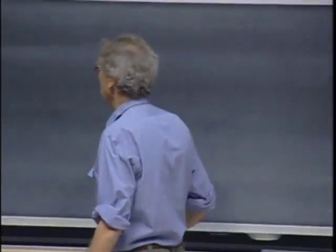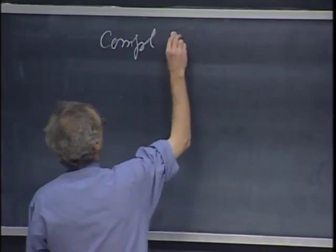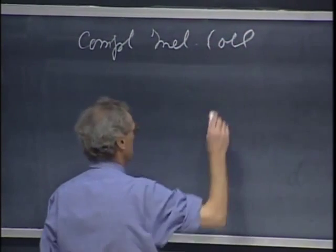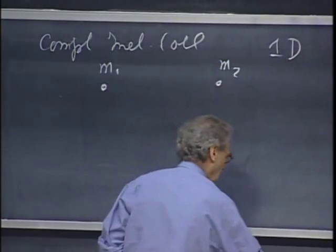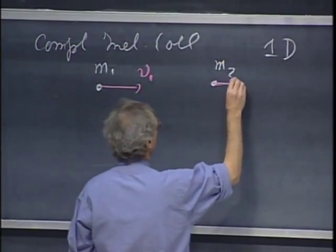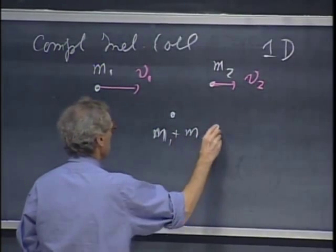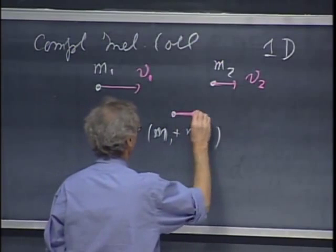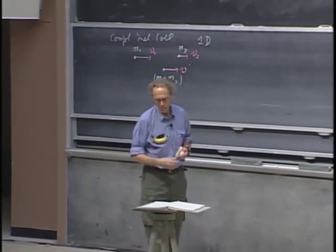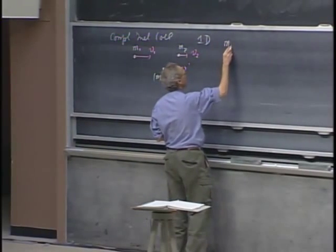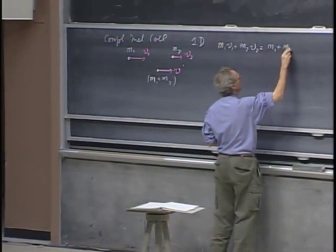Let's start with a completely inelastic collision. We have mass m1 with mass m2. It's a one-dimensional problem. This one has velocity v1, and this has velocity v2. They collide, and after the collision they are together, because that's what it means when the collision is completely inelastic, and they have a velocity v prime. If there is no net external force on the system, momentum must be conserved. So m1 v1 plus m2 v2 must equal m1 plus m2 times v prime.